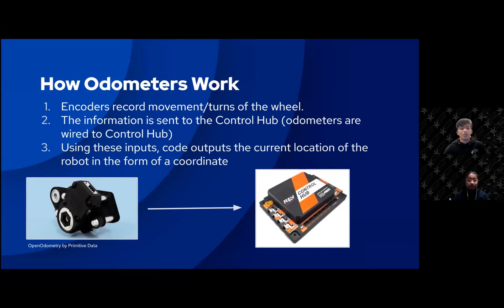So how odometers work: in this case we are using open odometry, and the encoder module would be attached to an omniwheel. Using the circumference of the omniwheel and the amount of times the omniwheel rotates, we can calculate exactly how far the wheel has traveled. This information is sent to the control hub, which the odometers are wired to. Using these inputs, the code outputs the current location of the robot in the form of a coordinate, allowing teams to track exactly where the robot is in both the autonomous period and during teleop.